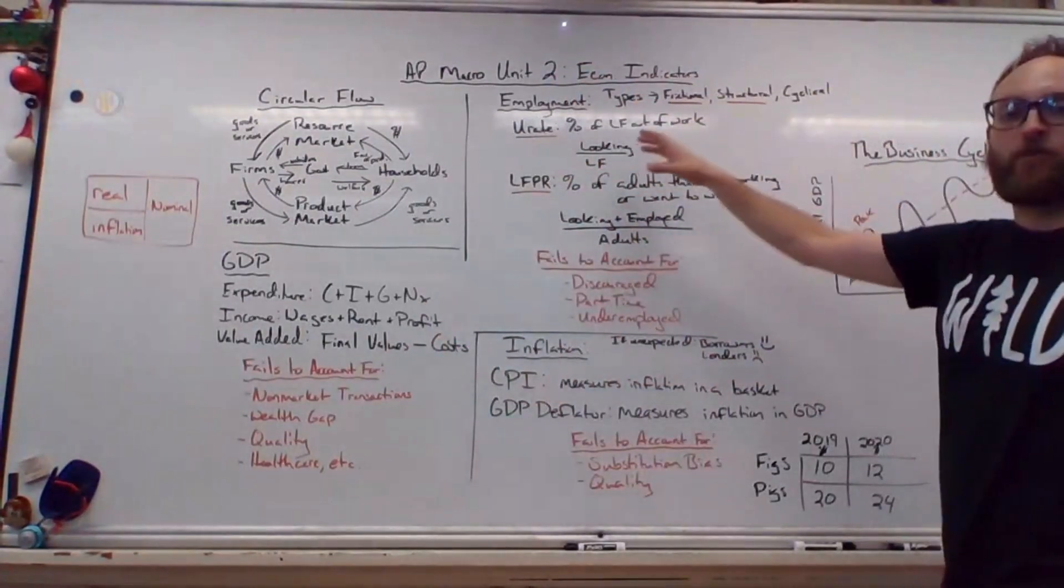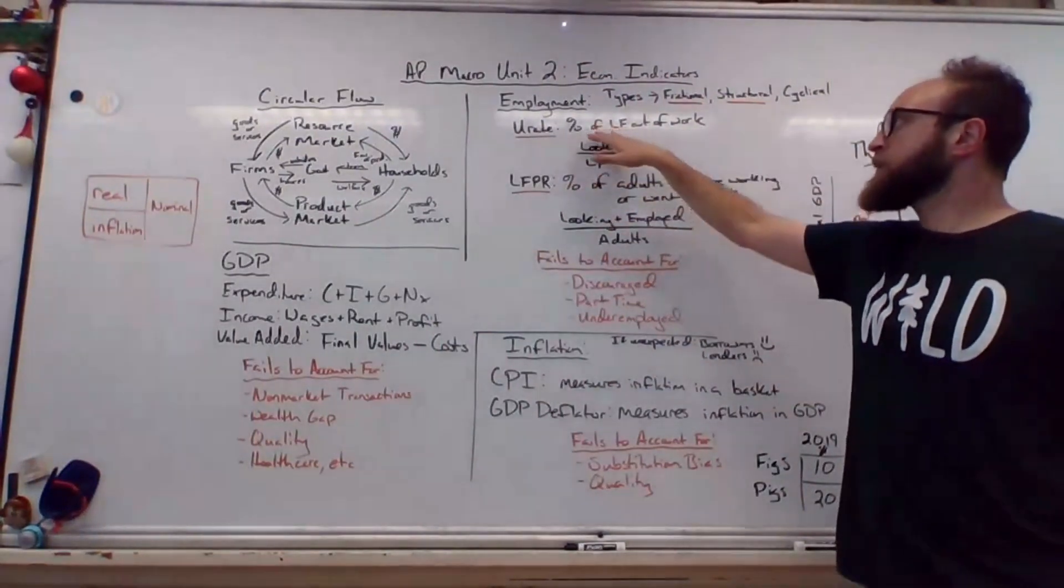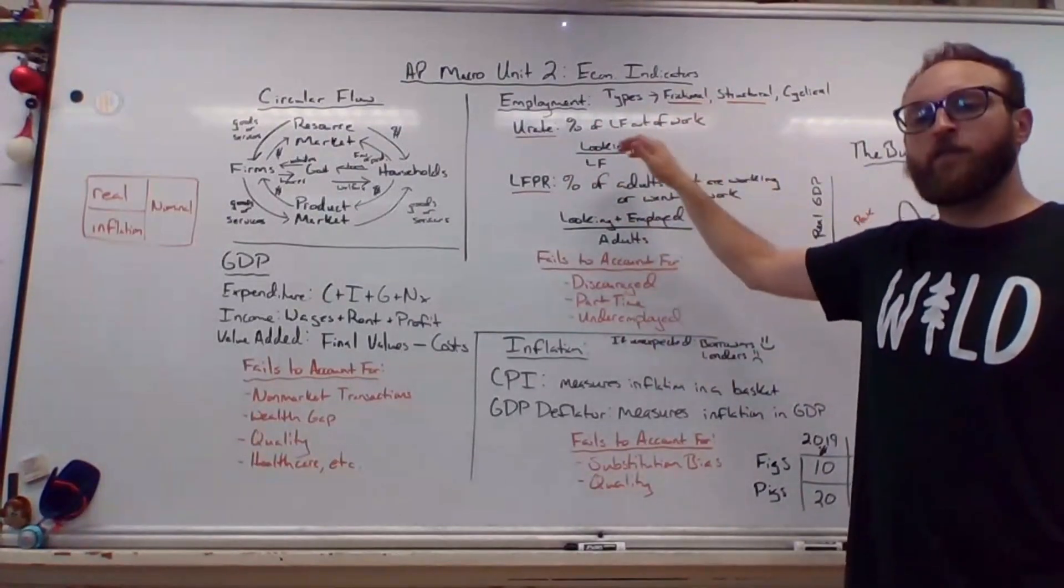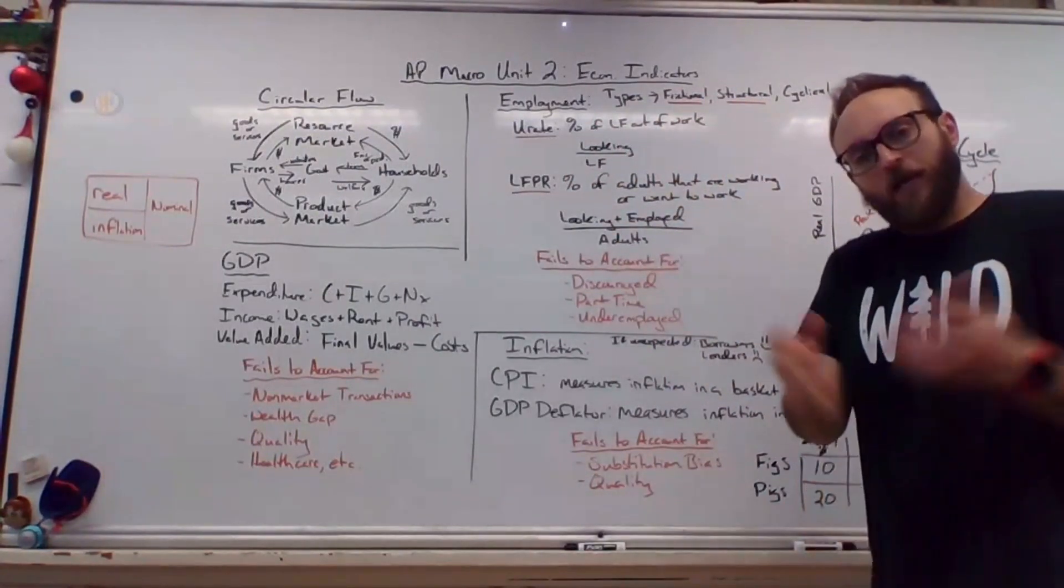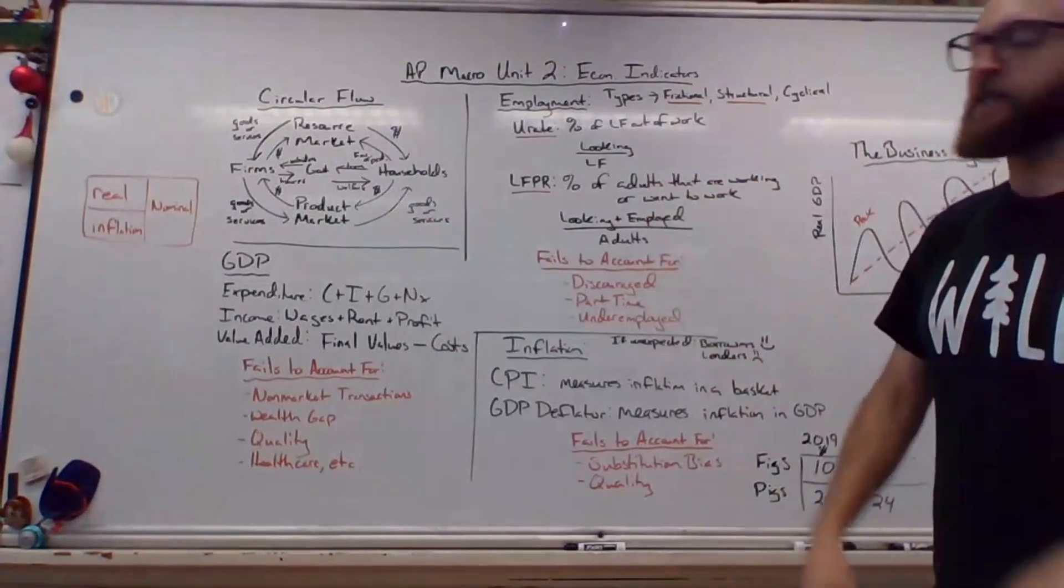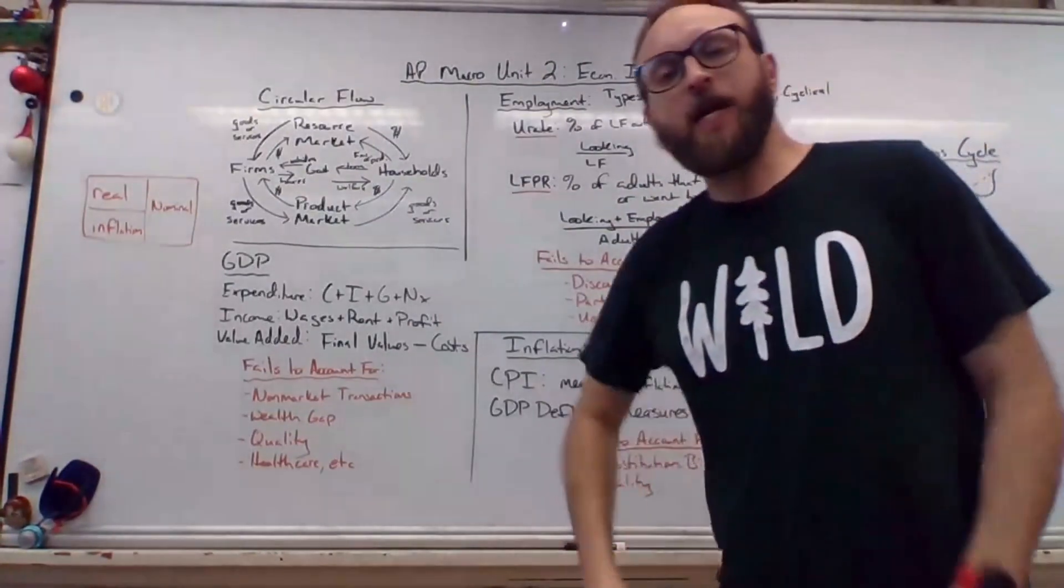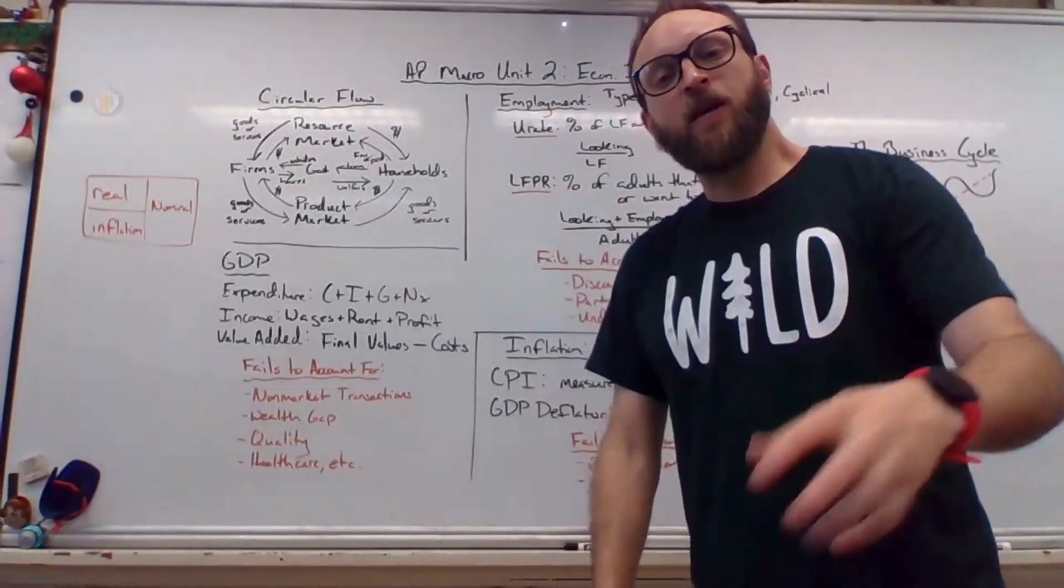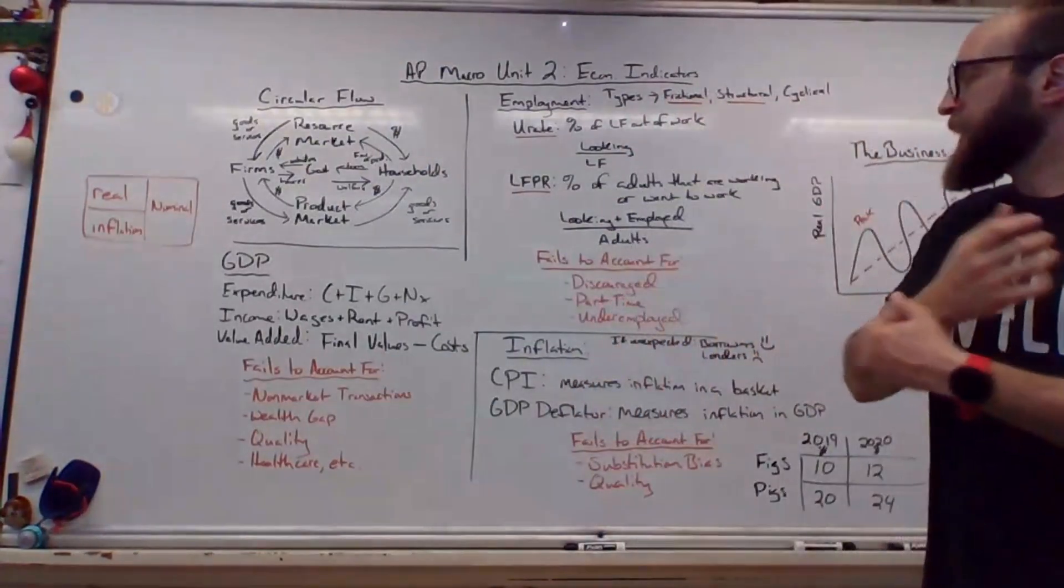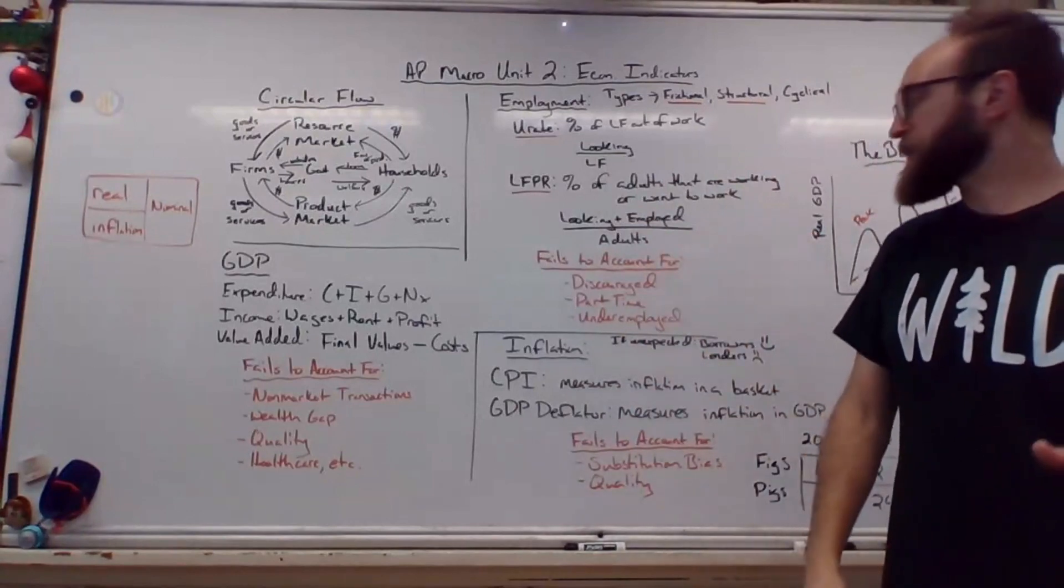Moving on is employment, or unemployment as the case may be, which is just this concept of trying to figure out a percentage of the labor force that is not working. So you take everybody who's looking and you divide it by the labor force, everybody who can work or is working. The labor force participation rate is the percent of adults that are working or want to work. So they're not exactly working right now, but they're in the process of looking or they're eligible and they're actually putting themselves out there. This calculation is people looking plus employed over all adults. That's going to be people over 16.